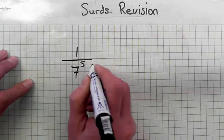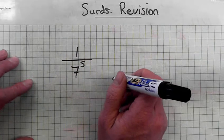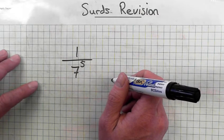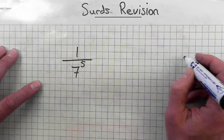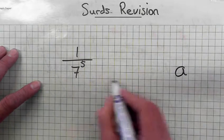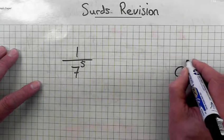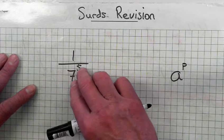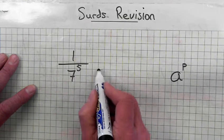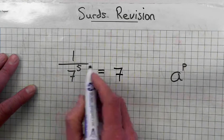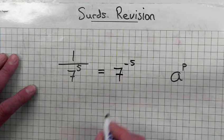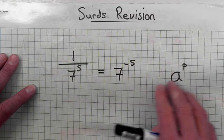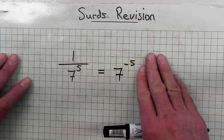One over seven to the power of five. The question says to write the answer in the form A to the power of P, where A is the base. Seven to the power of five is below the line. If I move seven to the power of five above the line, I change the sign of the power to minus five. So A is seven and the power is minus five — seven to the power of negative five.